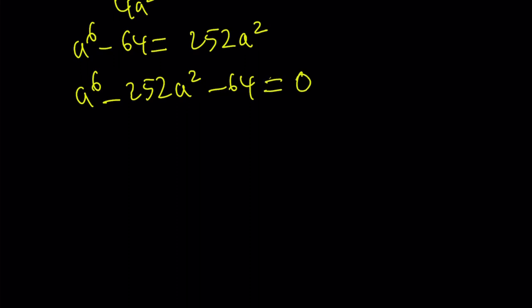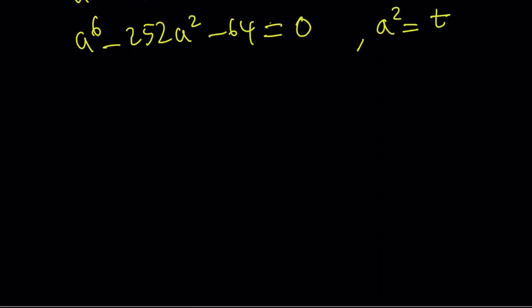I can go ahead and call a squared, let's set it equal to t. We get t cubed minus 252t minus 64 is equal to 0.